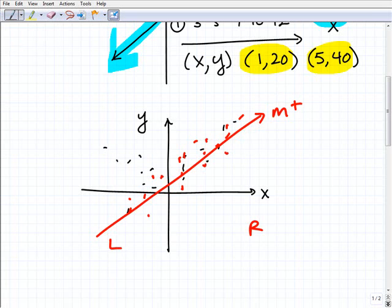Likewise, if you had something that plotted the trend this way, that would have a negative correlation. So this word correlation is used a lot when we talk about scatter plots.